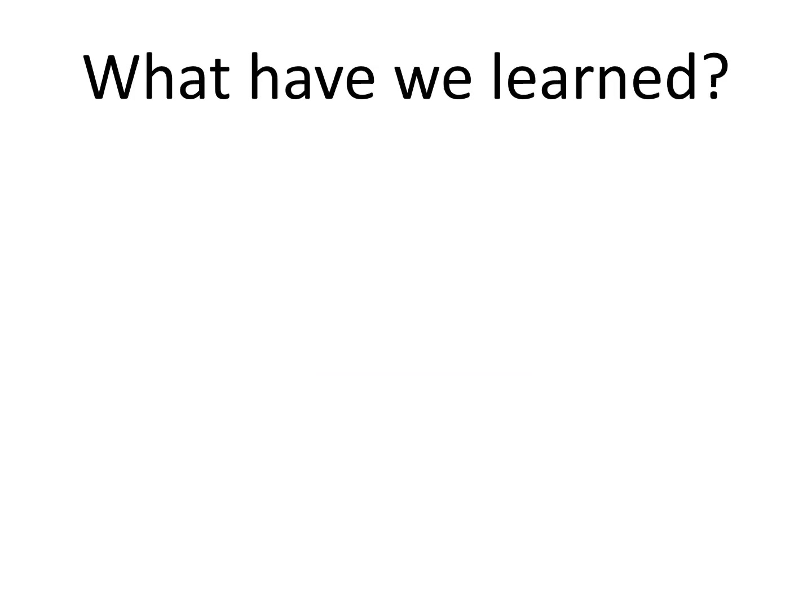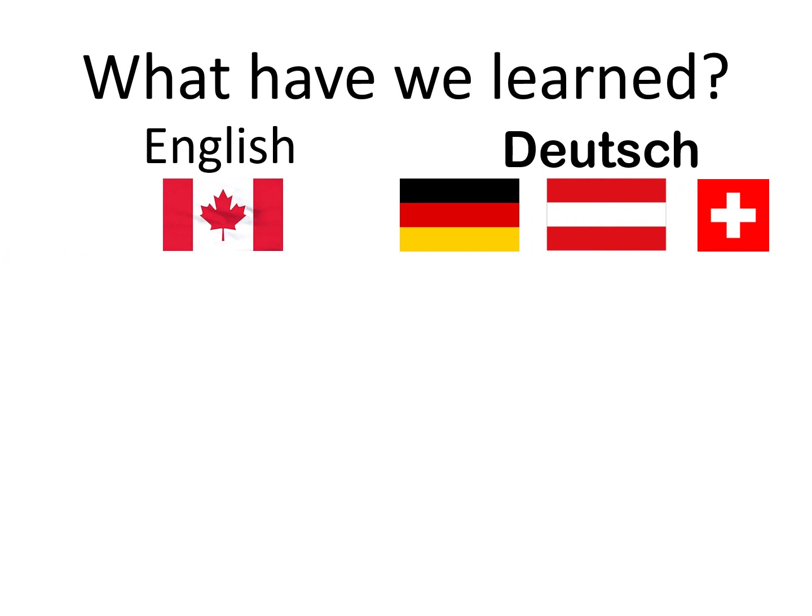It's time to do some review of some of the things that we have learned. What have we learned? Well, in the very first lesson, we learned that German or Deutsch is a language that is spoken in many countries, including Germany, Austria and Switzerland — the three flags that I'm showing there. And English is widely spoken, but in Western Canada it is the predominant language here.